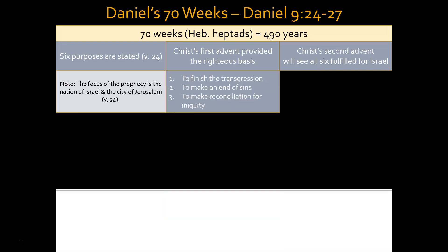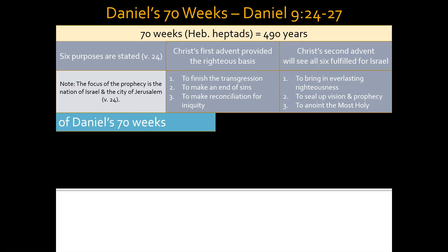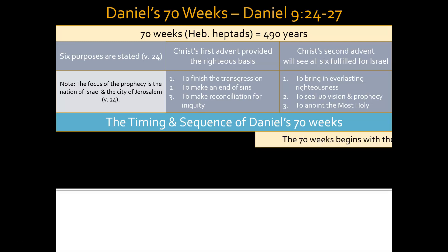The first three purposes are: to finish the transgression, to make an end of sins, to make reconciliation for iniquity. Christ's death on the cross provided the righteous basis for those things to be offered to the nation of Israel. But when Christ comes again to establish his messianic kingdom, he will bring in everlasting righteousness, seal up vision and prophecy, and anoint the most holy. We want to think about the timing and sequence of these 70 weeks prophesied in Daniel chapter 9.